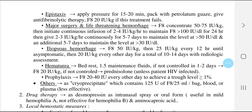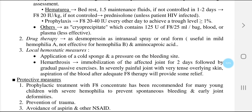If hematuria is not controlled in 1 to 2 days, give factor 8 at 20 international units per kg. If still not controlled, start prednisolone unless the patient is HIV infected. Prophylaxis of hemophilia includes factor 8: 20 to 40 international units every other day to achieve trough levels of more than or equal to 1%. Other measures include cryoprecipitate, which contains 125 units of factor 8 per bag, though it is less effective than factor 8 concentrate.